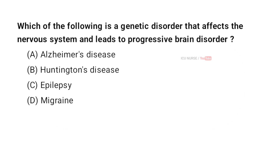Which of the following is a genetic disorder that affects the nervous system and leads to progressive brain disorder? A. Alzheimer's disease, B. Huntington's disease, C. Epilepsy, D. Migraine. And the correct answer is B. Huntington's disease.